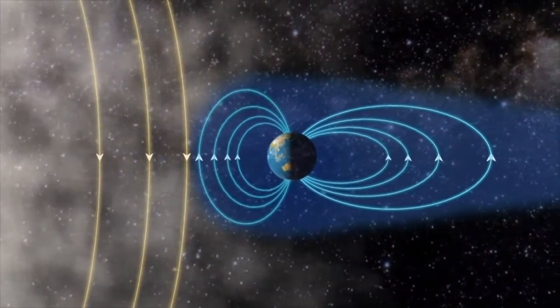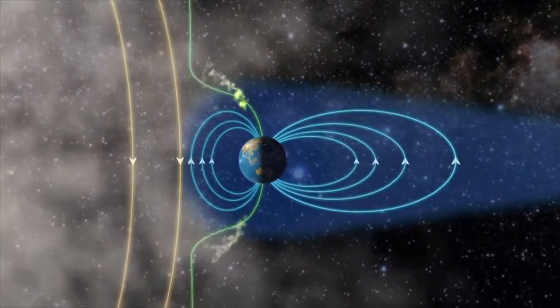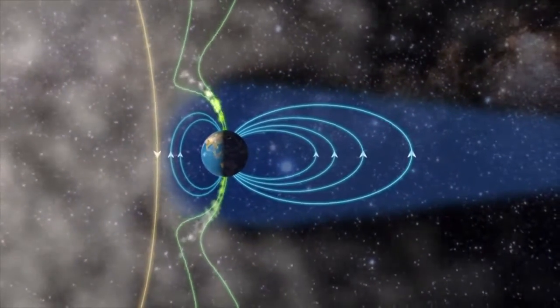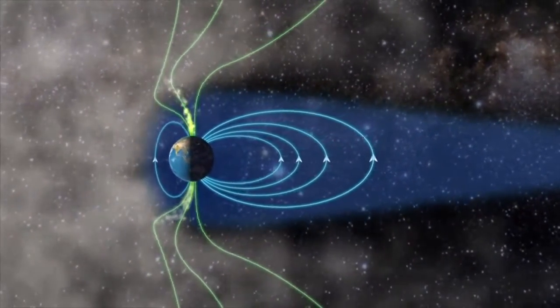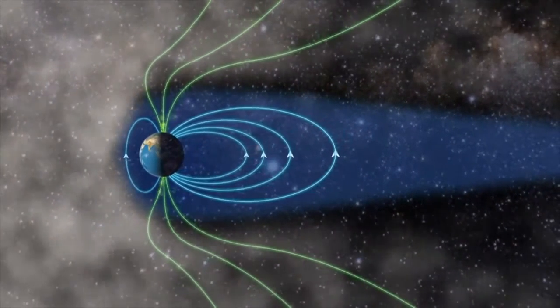The magnetic fields couple together and create a funnel where the gas streams down on the daylight side of the pole. This is the daylight aurora.